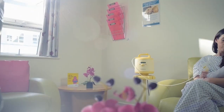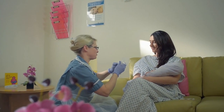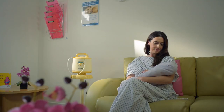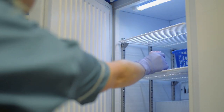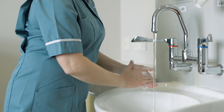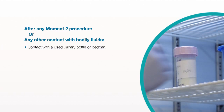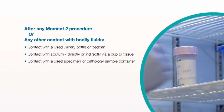The role of Moment Three is to protect yourself and the healthcare surroundings. After touching a patient, the healthcare worker has the patient's microorganisms on their hands, which can be passed on to whatever they contact next. Moment Three should be performed after any Moment Two procedure. Other examples include contact with a used urinary bottle or bedpan, contact with sputum directly or indirectly via a cup or tissue, or contact with a used specimen or pathology sample container.